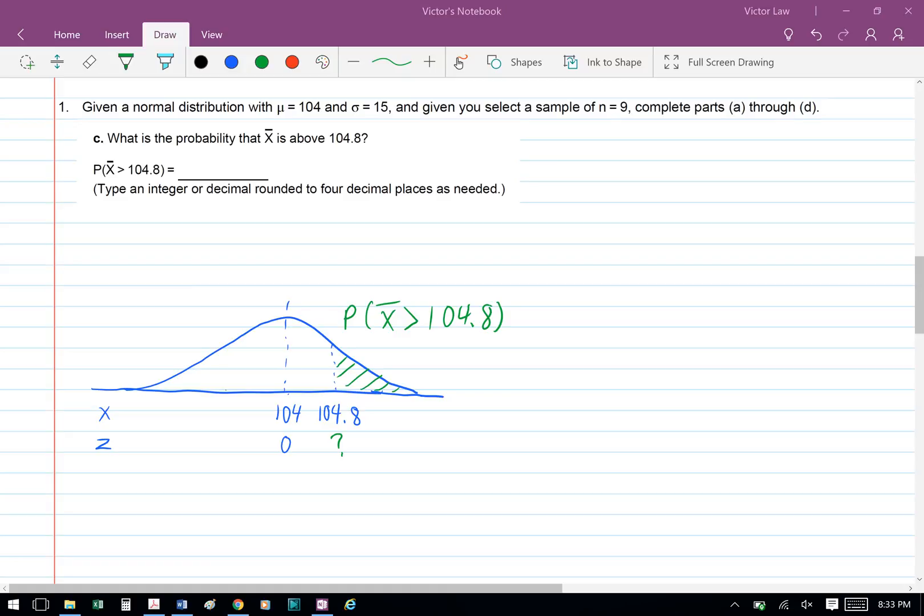Part C, what is the probability that x bar is above 104.8? We need to first find the z value when x is equal to 104.8.